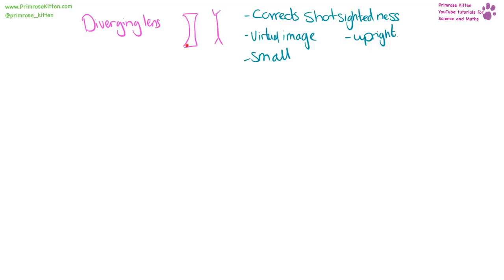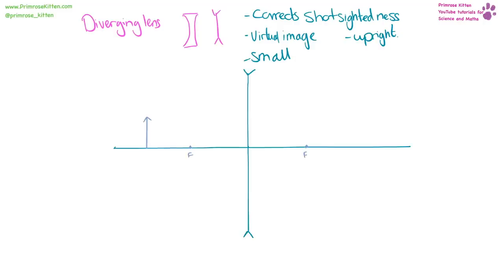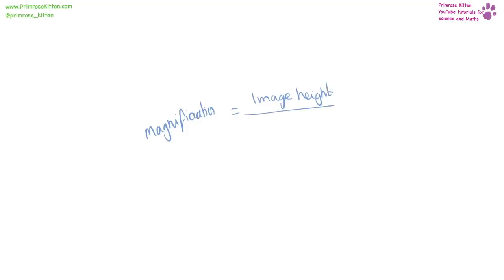A diverging lens is concave-shaped and corrects short-sightedness. It produces a virtual image that is upright but smaller. For the ray diagram: the first line goes from the top of the object to the lens, then backtracks through the focus on the same side as the object. The second line goes from the top through the middle of the lens. Where those two lines cross is the virtual image. Magnification equals image height divided by object height — there are no units for magnification.